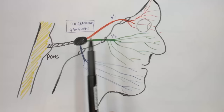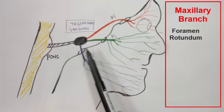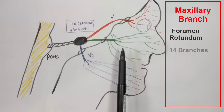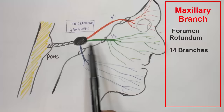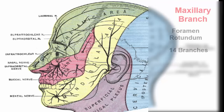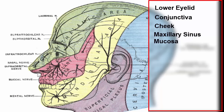The second division, the maxillary branch, arises from the trigeminal ganglion, runs forward, and exits the cranium through the foramen rotundum. It also runs through the lateral part of the cavernous sinus. After exiting through the foramen rotundum, the maxillary branch divides into 14 branches supplying the middle part of the face — including the lower eyelid, conjunctiva, skin of the cheek, maxillary sinus, nasal cavity, upper lip, and upper molar, incisor, and canine teeth.